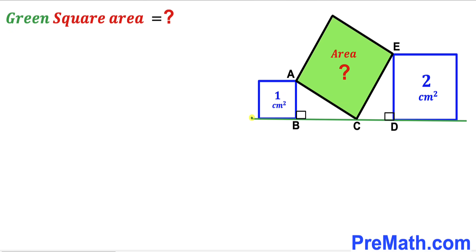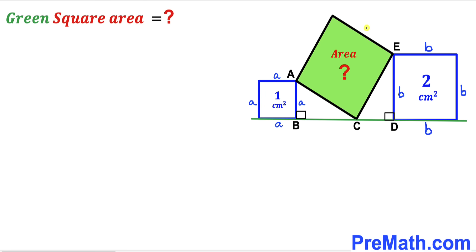Let's get started. Since we are dealing with squares, all sides of each square have the same side length. I'll label the smaller blue square's side length as lowercase a, so all four sides are a. Likewise, the larger blue square's side length is lowercase b, so all sides are b. For the green shaded square, I'll label the side length as lowercase x, so all sides are x. Recall the area of a square formula: area equals s squared, where s is the side length.